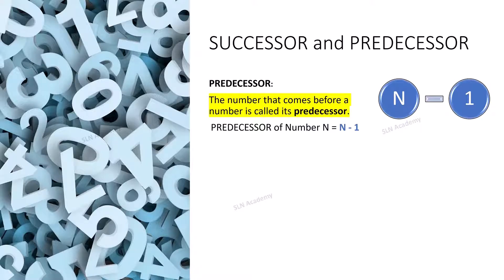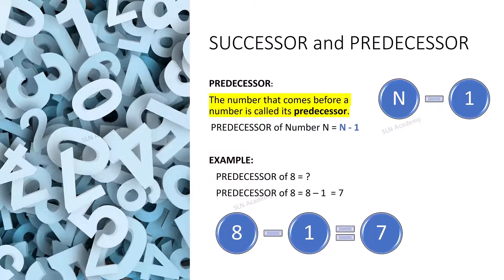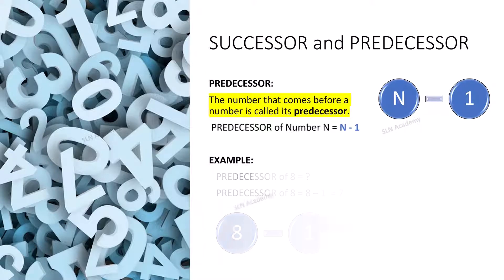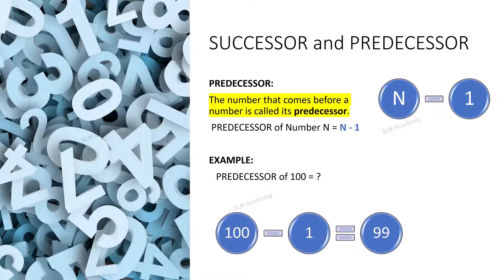Let me give you some examples. What is the predecessor of number 8? Predecessor of number 8 equals 8 minus 1, that is 7. What is the predecessor of 100? Predecessor of 100 equals 100 minus 1, which equals 99.